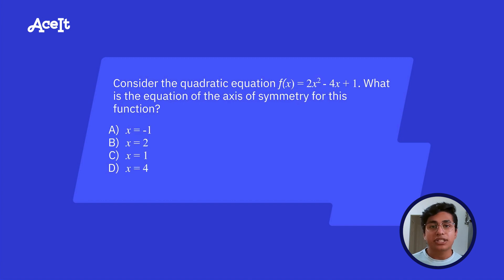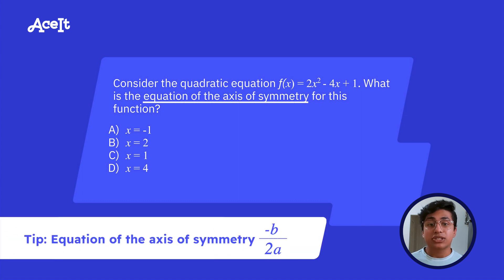The last strategy I wanted to share is slightly different from the other few strategies I talked about. And this is for the questions that ask you for the equation of the axis of symmetry. Now the fastest way to solve this is by using the equation -B/2A. Now I know all of these strategies I shared are very similar, so it's important to make sure you know all of them apart and memorize them so you don't mess it up on the exam.